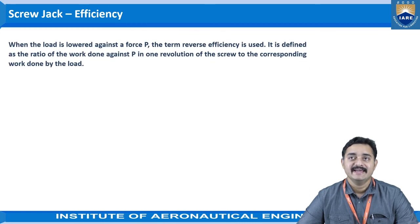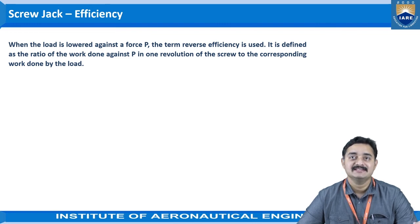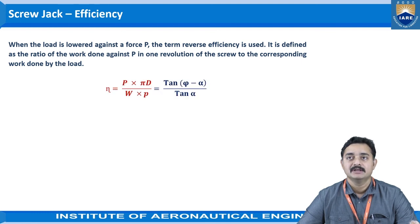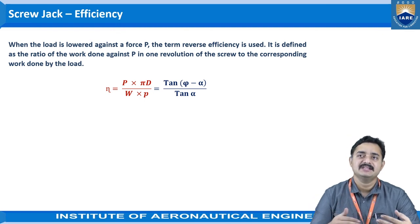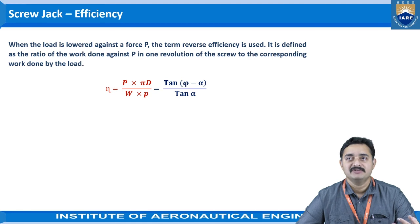When the load is lowered against a force P, the term 'reverse efficiency' is used. It is defined as the ratio of work done against P in one revolution of the screw to the corresponding work done by the load. The reverse efficiency equation is: efficiency = P·πd / (W·p) = tan(φ − α) / tan α.